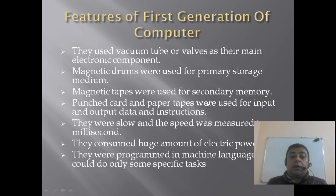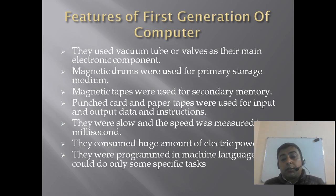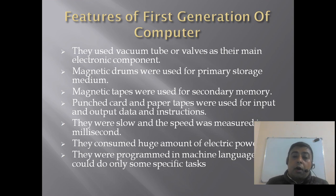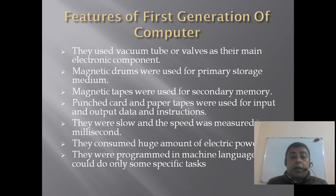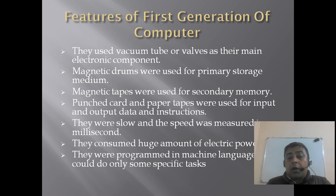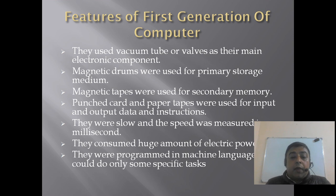The main features of first generation of computers were: they used vacuum tubes or valves as their main electronic component. Magnetic drums were used for primary storage. Magnetic tapes were used for secondary memory, as well as punch cards and paper tapes were used for input and output of data and instructions. They were very slow and the speed was measured in milliseconds.